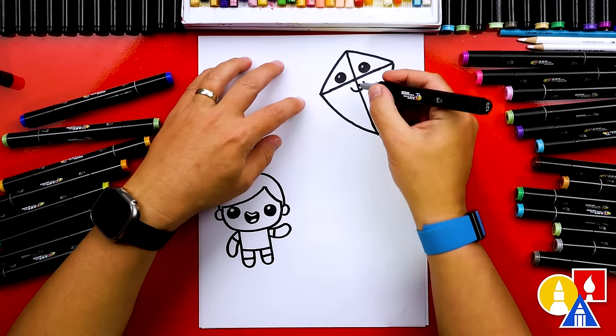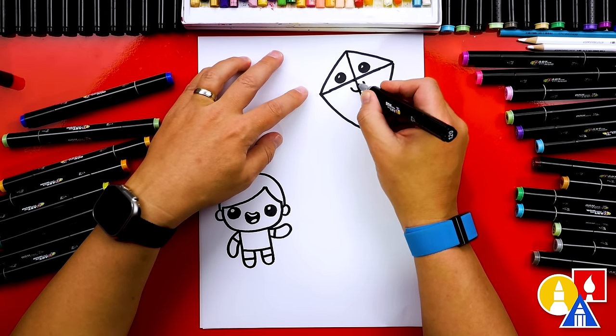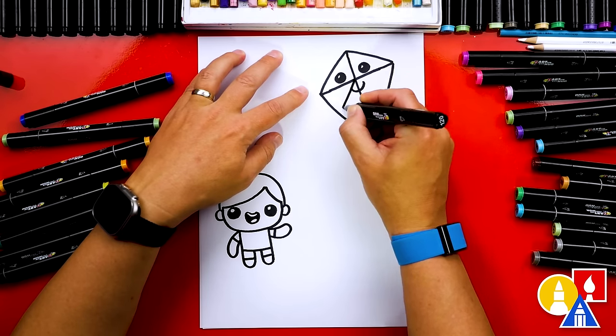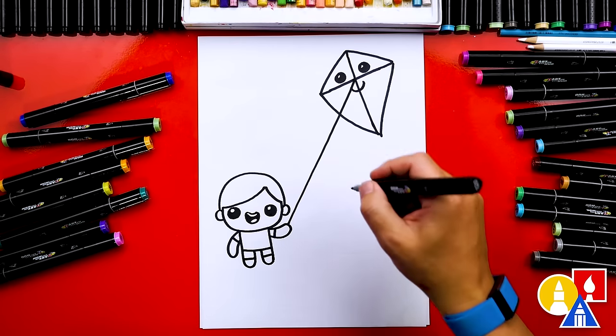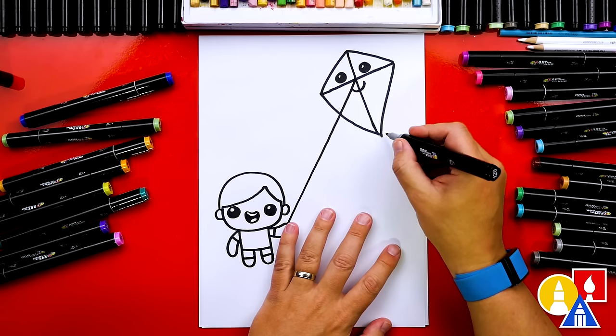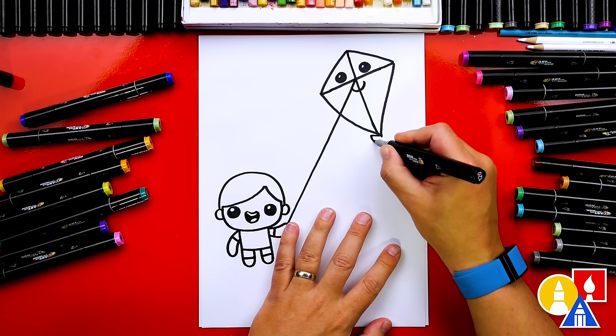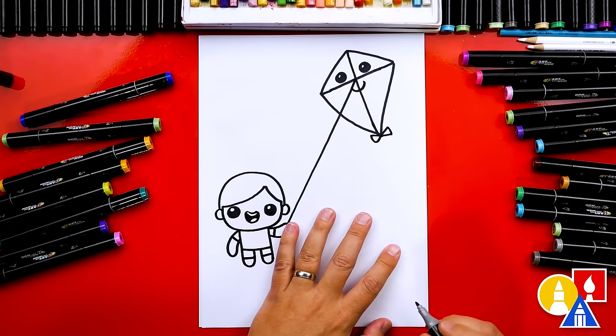There we go. Now let's add the string. I'm going to draw it coming straight from this cross right here and we're just going to draw it coming straight down to our kid's hand. Oh and then we also need the tail. We draw a little bow at the end.